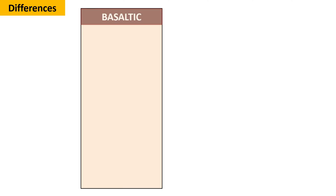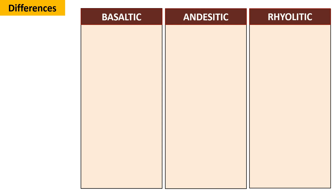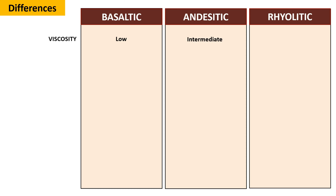The three types of magma are basaltic, acidic, and rhyolitic. Regarding viscosity, basaltic magma has low viscosity, acidic magma has intermediate viscosity, while rhyolitic magma exhibits high viscosity.